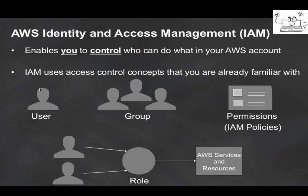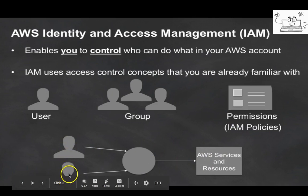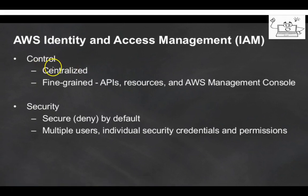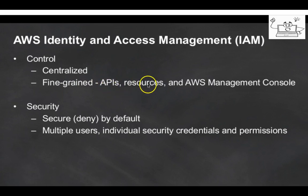IAM uses users, groups, and permissions managed through IAM policies, and individual users can access resources with the help of roles. IAM provides centralized authentication and authorization to resources, granular level resource access such as API access, resource access, and AWS Management Console access, and authorization to help maintain security in your account.